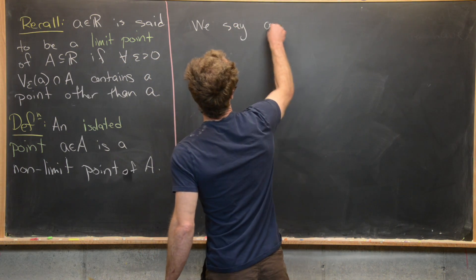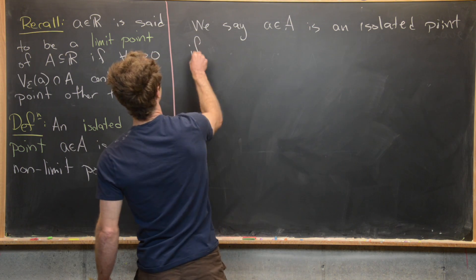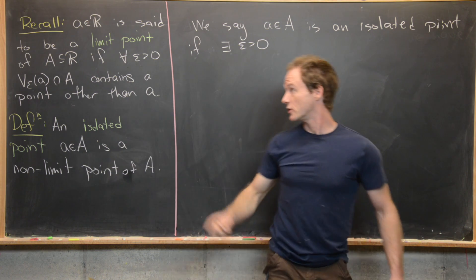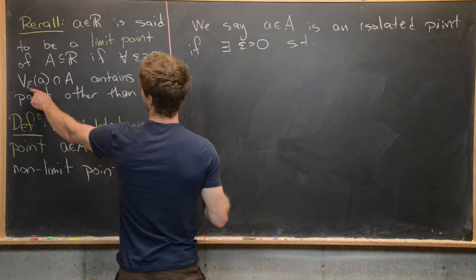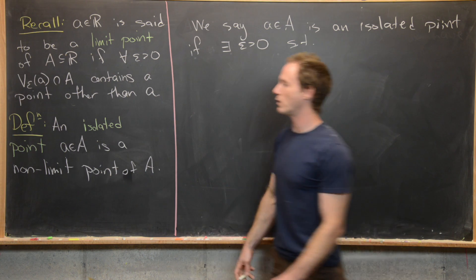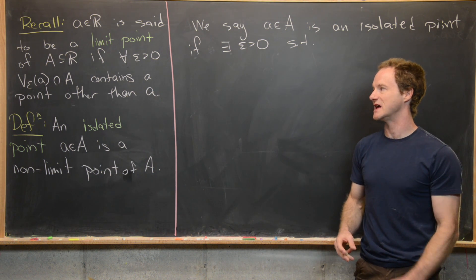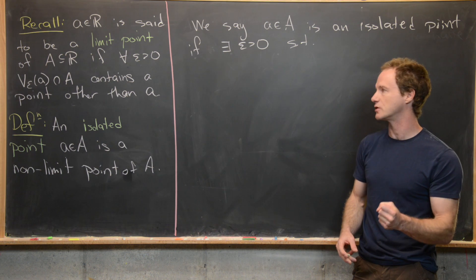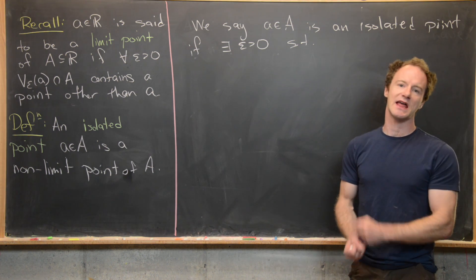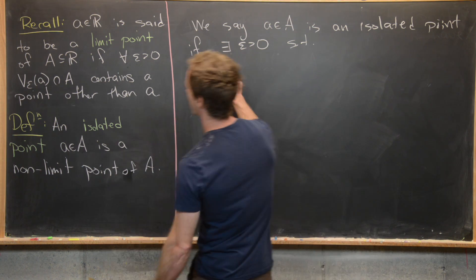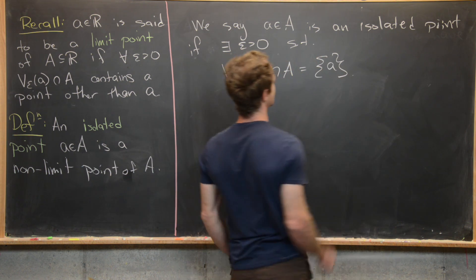We say A in A is an isolated point if there exists epsilon greater than zero — notice we've changed the for all to there exists — such that the epsilon neighborhood of A intersected with A does not contain any points other than A. Not containing any points other than A is the same as the intersection being the singleton {A}. So we can rewrite this as: the epsilon neighborhood of A intersected with A equals just the singleton {A}.